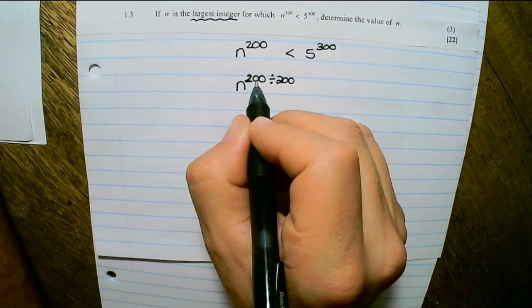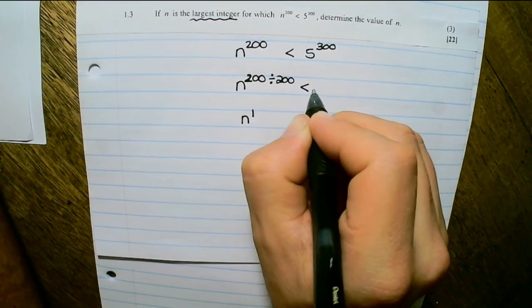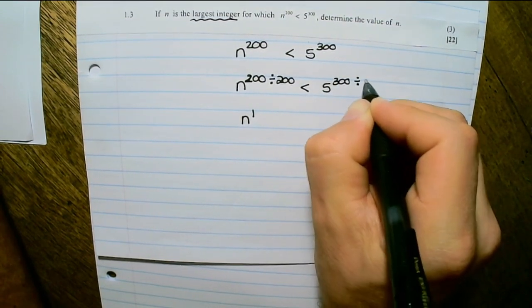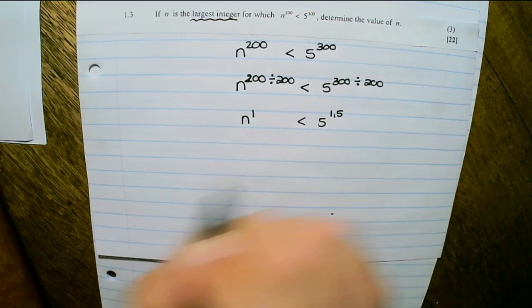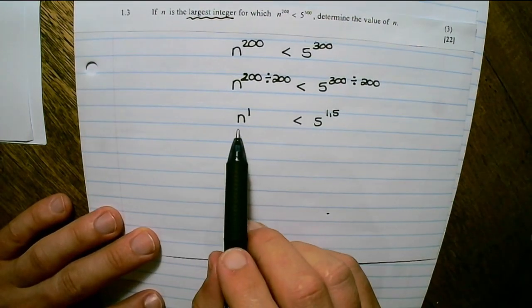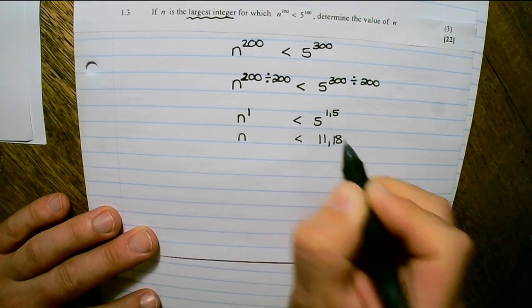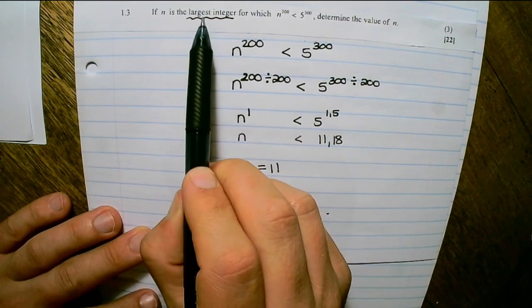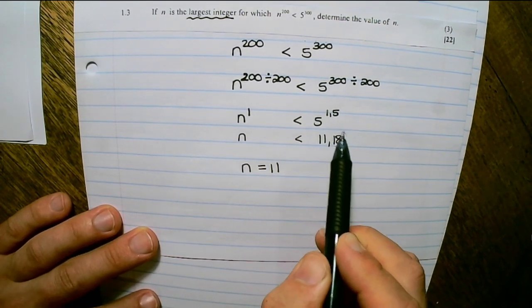So I divide the exponent of n to the power of 200 by 200, which creates n to the power of 1. What I do to the left exponent I do to the right: 5 to the power of 300 divided by 200 is 5 to the power of 1 and a half, which equals approximately 11.18. Therefore n equals 11, because the question asks for the largest integer value, so I ignore the decimal and take 11.